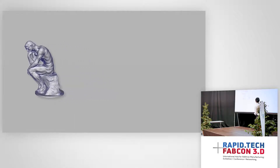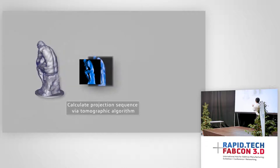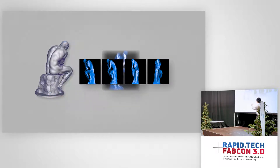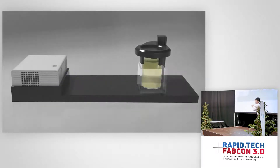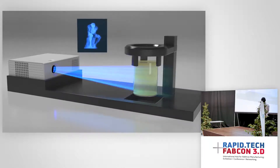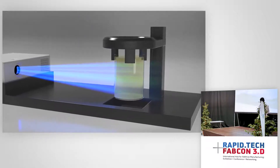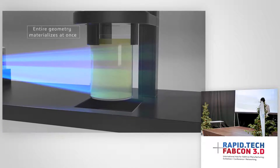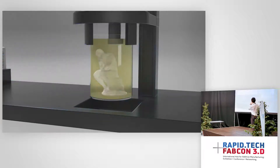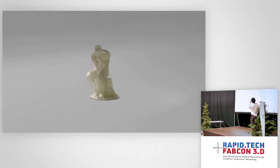Let's say we are printing a finger. We calculate the projections required at any given angle. After we have this stack of images, we make it into a video and load it to the projector. We play this video while rotating the container in synchrony, such that after 50 seconds you will see the entire part form in the container. The benefit is that all points are forming simultaneously, and then you just drain away the underexposed material and you have your part.